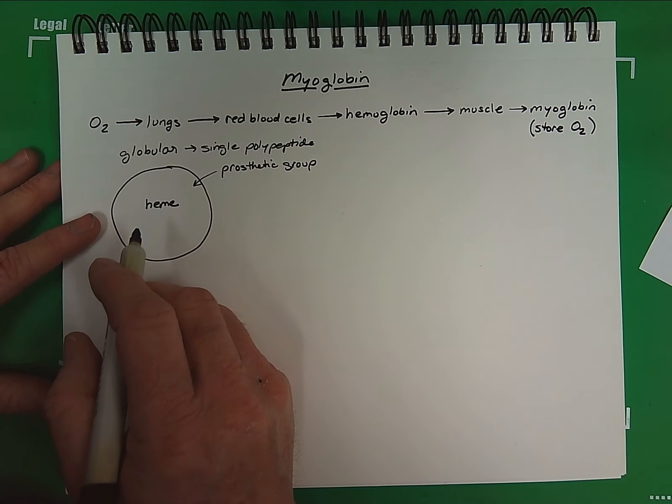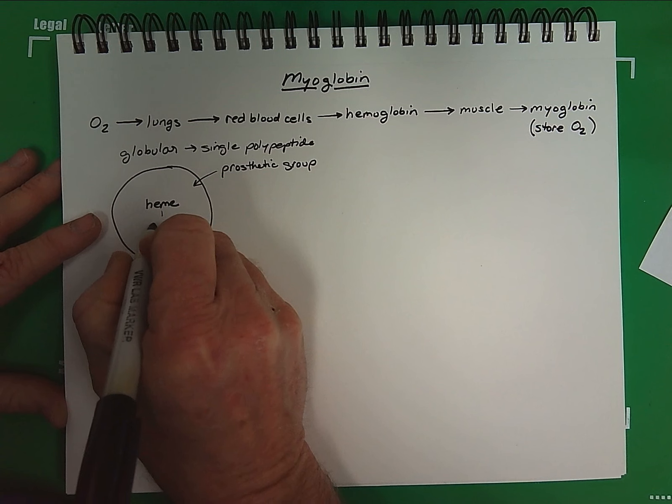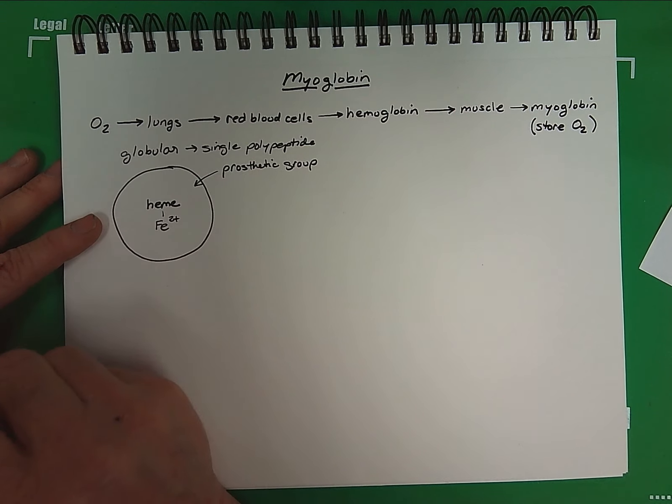The heme is a specific structure we'll take a look at in a second, and this is bound to the center of the myoglobin protein. Heme binds iron, and this particular iron is in a 2-plus state.